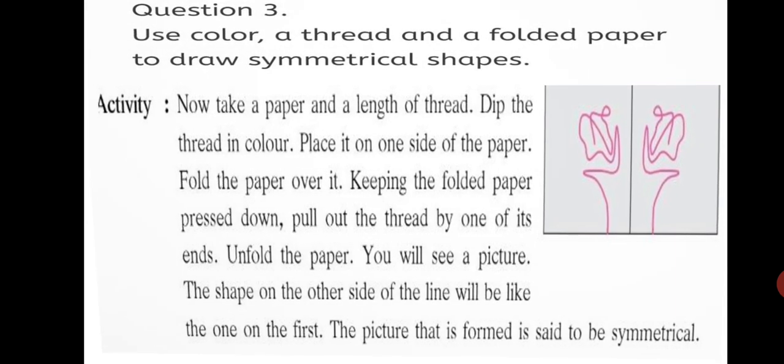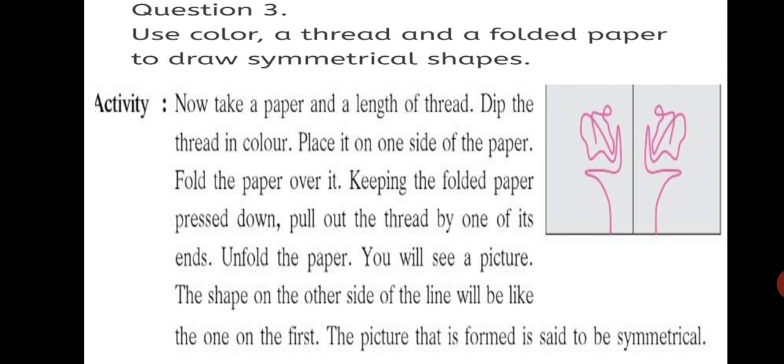Let's go to question number 3. Use color, a thread, and a folded paper to draw symmetrical shapes. Previously I told you how you can fold a paper and use colors to draw a symmetrical shape by just pressing on it. Now, similar activity is asked here. But, we are going to dip the thread in color first and then keep it on one side of the paper. Fold the paper and pull the thread slowly so that you get a symmetrical figure on both sides.